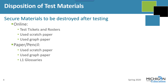If you're a school that tested only online, then secure materials for you are going to be limited to the printed test tickets and rosters, and any used scratch and graph paper. Paper-pencil schools have more secure materials, of course, but as far as secure materials that need to be destroyed, we're talking about the used scratch and graph paper, L1 glossaries — that means the first language glossaries used by students learning English. All of the rest of the secure materials in paper-pencil testing have to be returned to the scoring contractor.